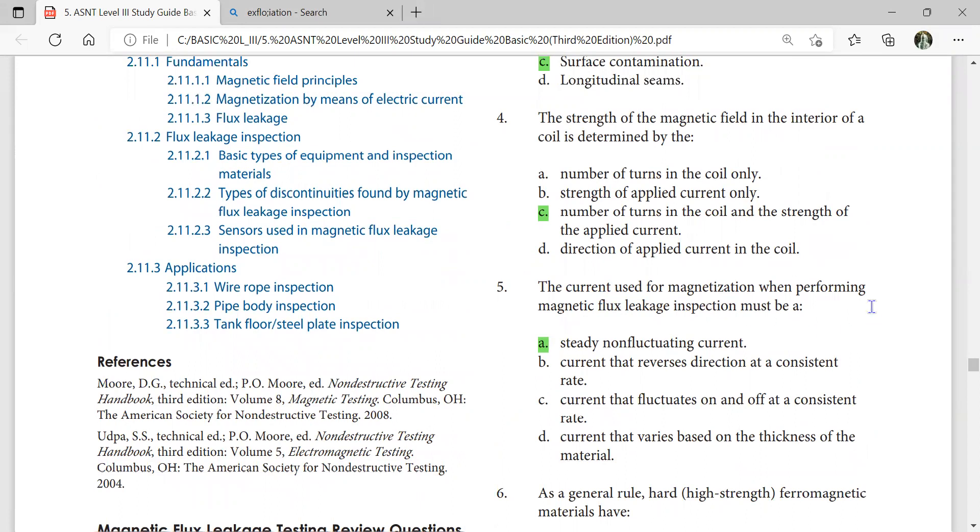The current used for magnetization when performing magnetic flux leakage inspection may be a steady, non-fluctuating current.